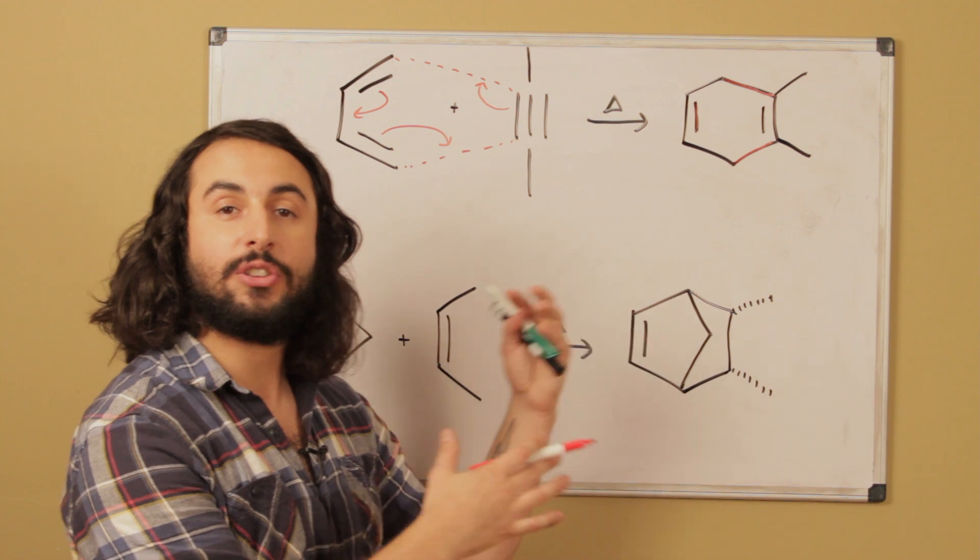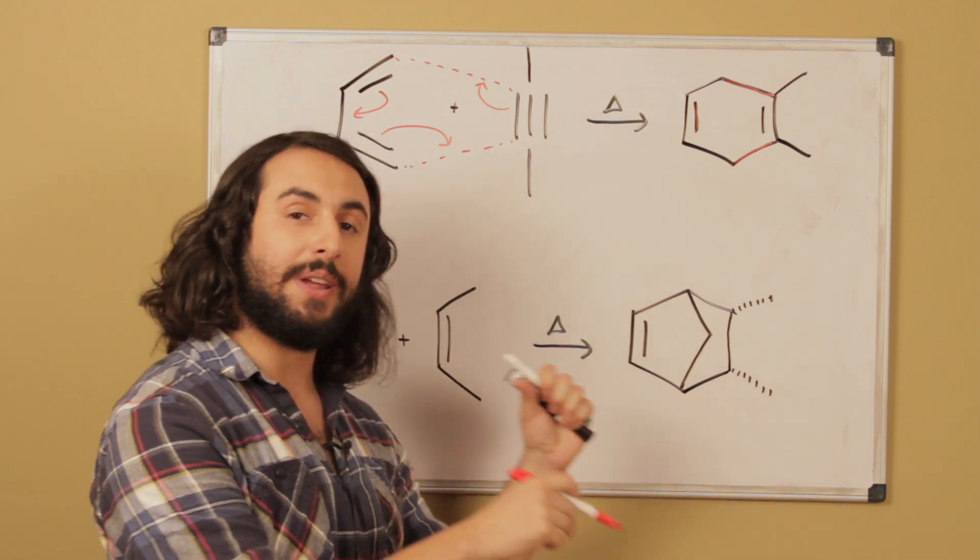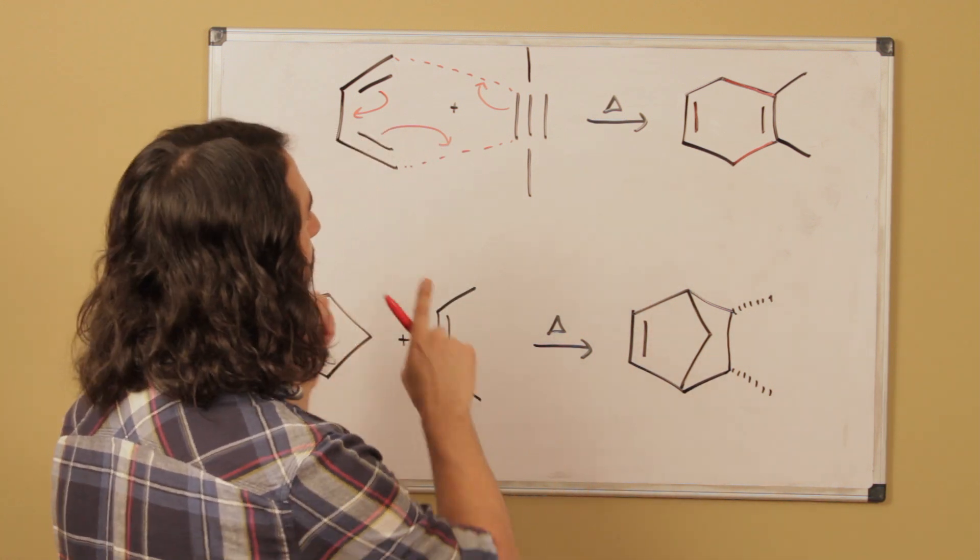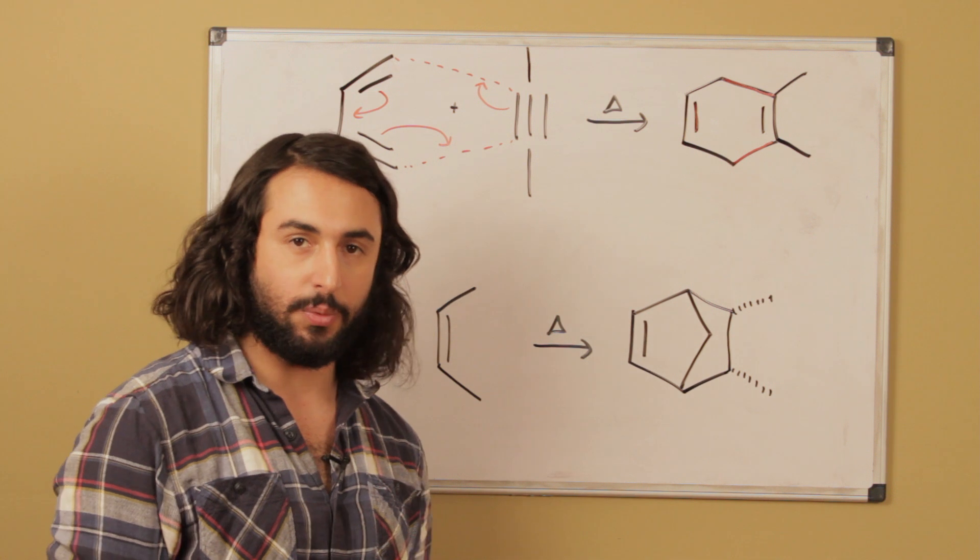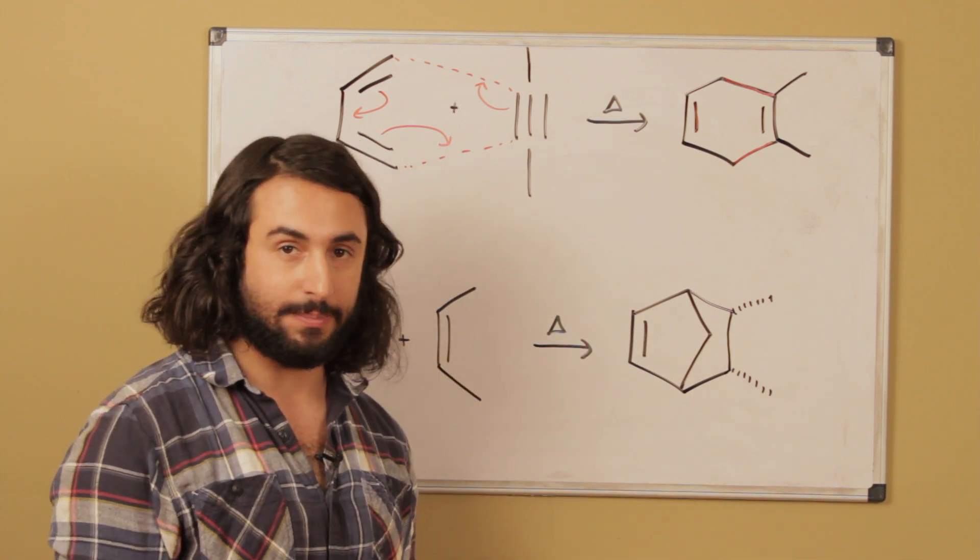Now over here we want to go retrosynthetically. It's very important to be able to look at a product and see the reactants that it might have come from. And so if in Diels-Alder we always make a six membered ring, if we're doing retro Diels-Alder we always break a six membered ring.